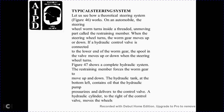The typical steering system, shown in Figure 46, works as follows for automobile steering: the worm turns inside when the steering wheel is turned. The restraining member holds the worm gear, which then moves the hydraulic control valve connected to the lower end of the worm gear. The spool valve moves up and down as the steering wheel is turned. Figure 47 shows the complete hydraulic system. The restraining member forces the worm gear to move up and down. The hydraulic tank, pump, pressure delivered to the control valve, the hydraulic cylinder, and the right control valve all work together to move the wheels.